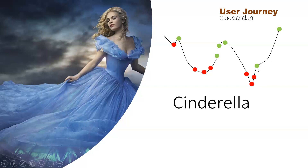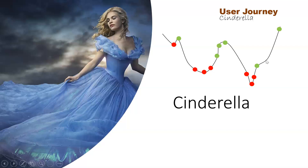Then suddenly the fairy godmother appears, fixes her dress, turns a pumpkin into a carriage, rats into horses, lizards into horsemen, and says that before the clock strikes 12 she has to come back before the magic wears off. She goes to the ball, is able to charm the Prince — but she leaves behind her glass crystal shoes. The Prince goes looking for her everywhere, finally finds her, the shoe fits, and they marry and live happily ever after.